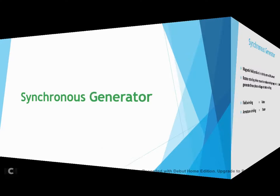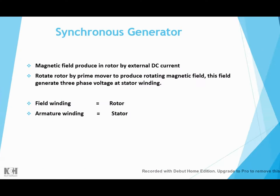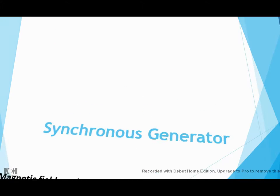Synchronous generator. A magnetic field is produced in the rotor by DC current. The rotor is rotated by a prime mover to produce a rotating magnetic field, which generates three-phase voltage at the stator winding. The field winding is equal to the rotor, and the armature winding is equal to the stator.